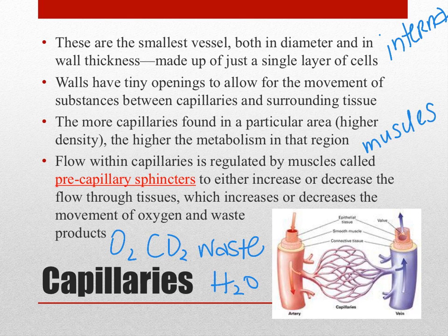Sometimes it's important to slow down blood flow or even stop it altogether. When you're outside in the cold and your body wants to keep heat close to the important organs like your heart and brain, and minimize heat loss to the environment, little muscles called precapillary sphincters can close off blood flow to the capillaries in your fingertips, keeping blood deeper inside the body where it will stay warm. If we need to increase blood flow, just the opposite occurs — the precapillary sphincters open up and allow for more blood flow.